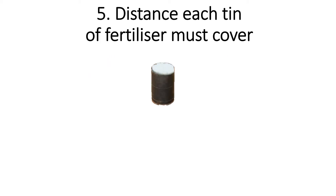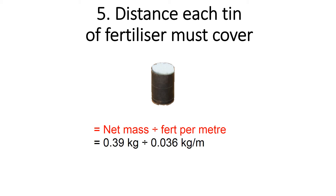The final calculation is to work out the distance that each tin of fertilizer must cover. We do this by taking the net mass and dividing it by the fertilizer per meter. In our example, this works out to 10.9 meters. So this means that the fertilizer in this tin must cover a distance of 10.9 meters.